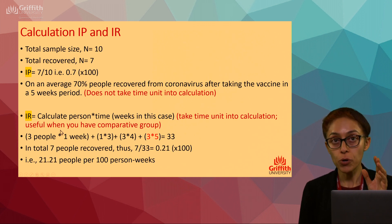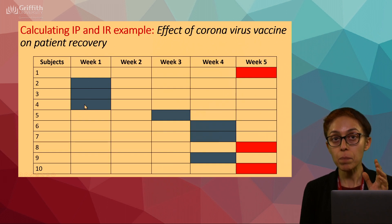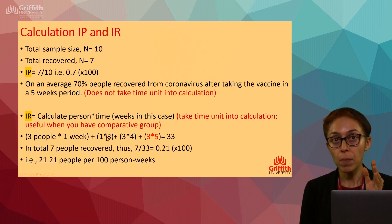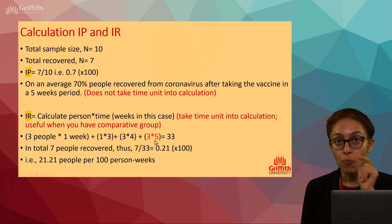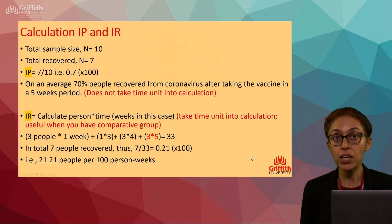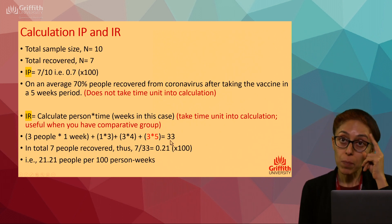For the incidence rate formula, you calculate person-time: (3 people × 1 week) + (1 person × 3 weeks) + (3 people × 4 weeks), then add the three people who did not recover, also multiplied by week five. Remember BODMAS — solve the brackets first, then add. Your total person-time comes to 33 person-weeks.